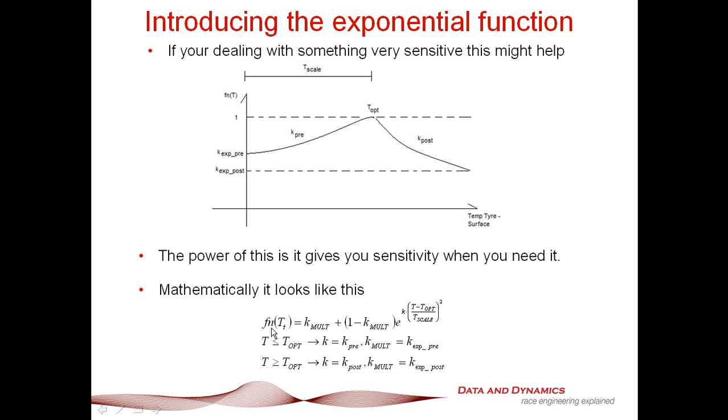Mathematically, what it looks like is: function t equals k multiplier plus (1 minus k multiplier) times e to the power of k(t minus t optimum over t scale) all squared. You don't have to be a rocket scientist to figure out that at t equals t optimum, that square term drops to 0, and consequently, you've got our function t equal to 1. For t less than t optimum, k is given by k pre, and our k multiplier is k exponential pre. When the surface temperature is greater than temperature optimum, k equals k post, k multiplication is k exponential post. You can also control what's going on using t scale to aid in the sensitivity.